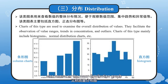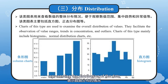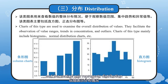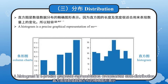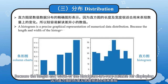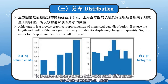The histogram, also known as the mass distribution graph, is a statistical report chart with a series of vertical bars or lines of varying heights representing the distribution of the data. Generally, the horizontal axis represents data types, and the vertical axis represents distribution. A histogram is a precise graphical representation of numerical data distribution, because the length and width of the histogram are very suitable for displaying changes in quantity. It is easier to interpret numbers with small differences.